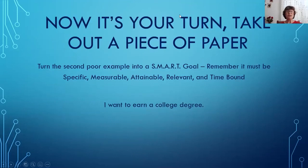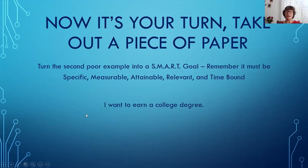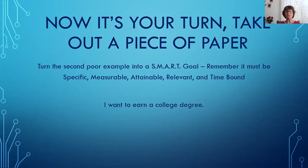Now it's your turn. Take out a piece of paper and turn the second poor example into a SMART goal. Remember, it must be specific, measurable, attainable, relevant, and time-bound. The overall goal is: 'I want to earn a college degree.' How are you going to turn that into a SMART goal for yourself? I hope you begin using SMART goals right away. When you reach that point in your educational career, I hope you'll come to Martin Community College and I hope to see you in some of my courses. Take care and enjoy the rest of your summer.